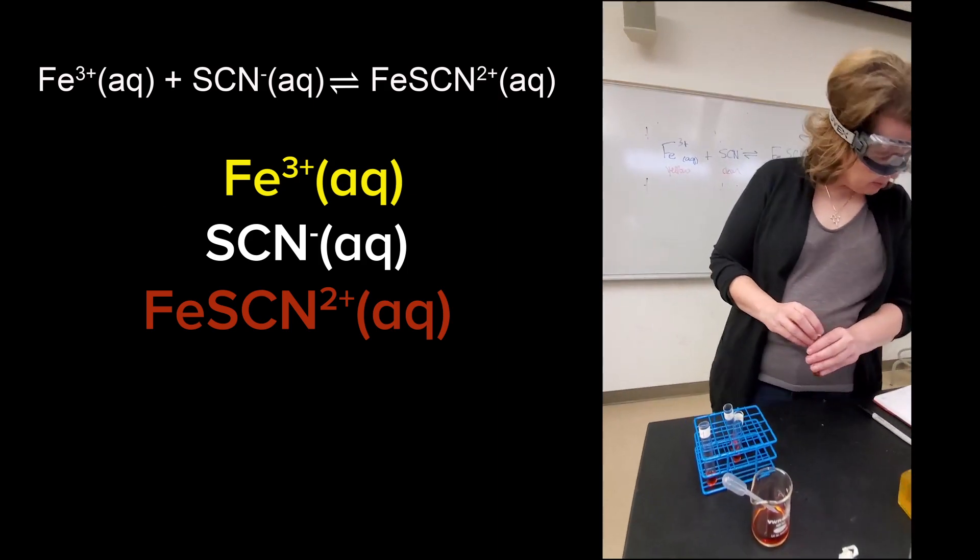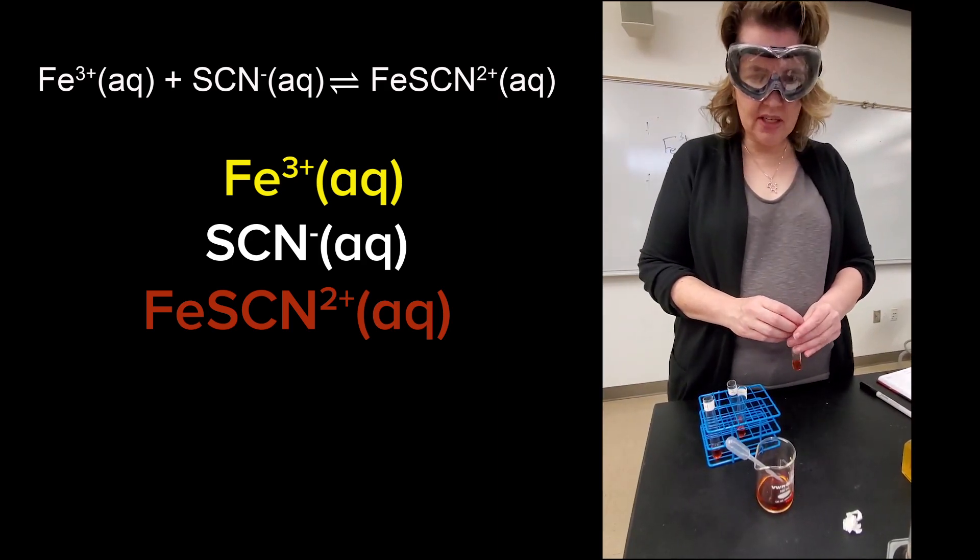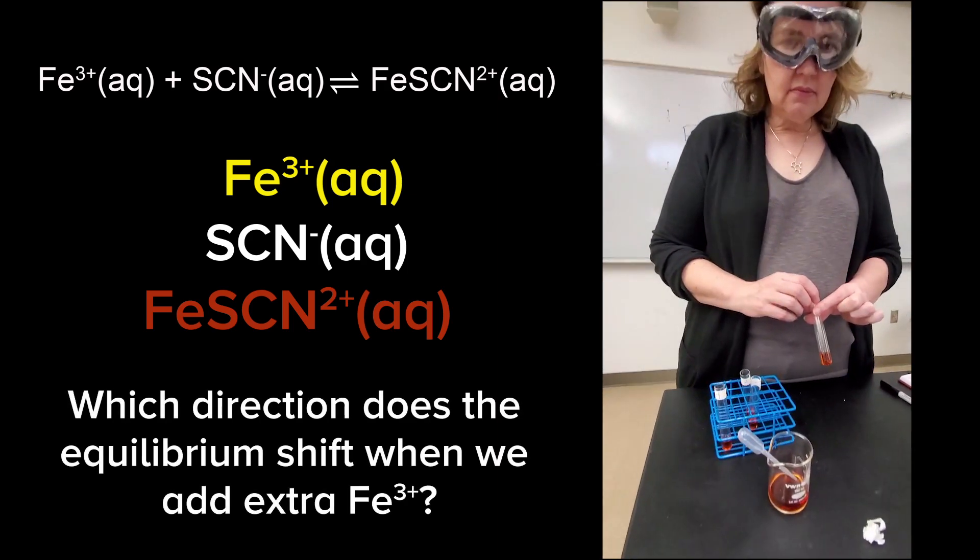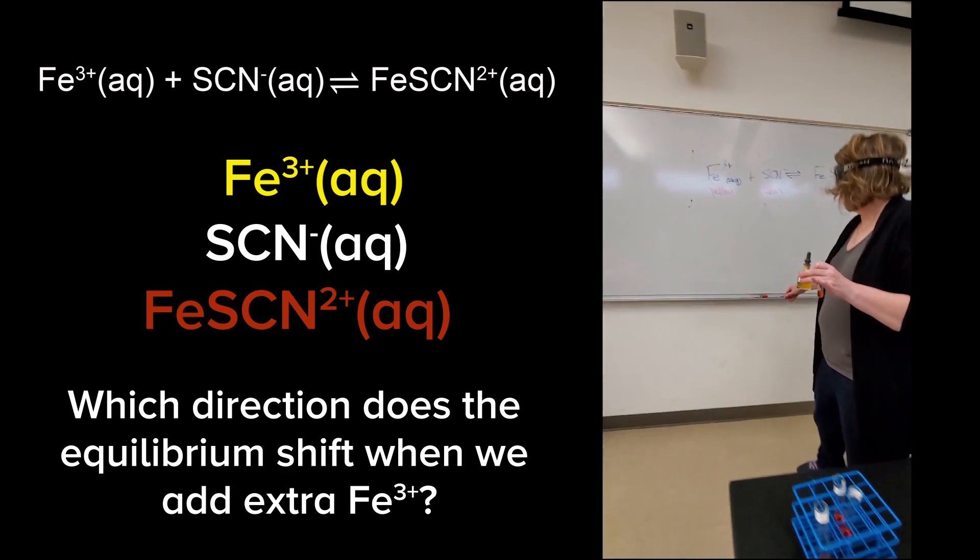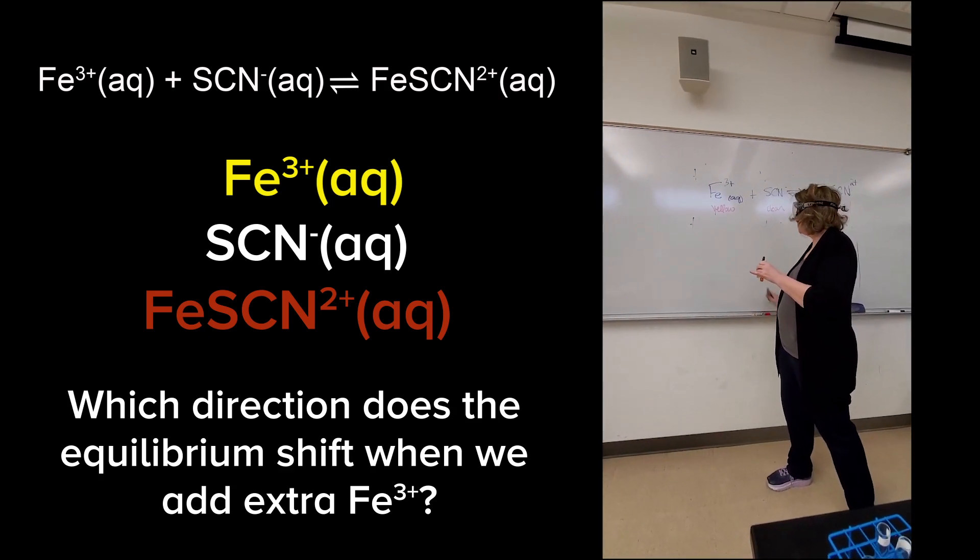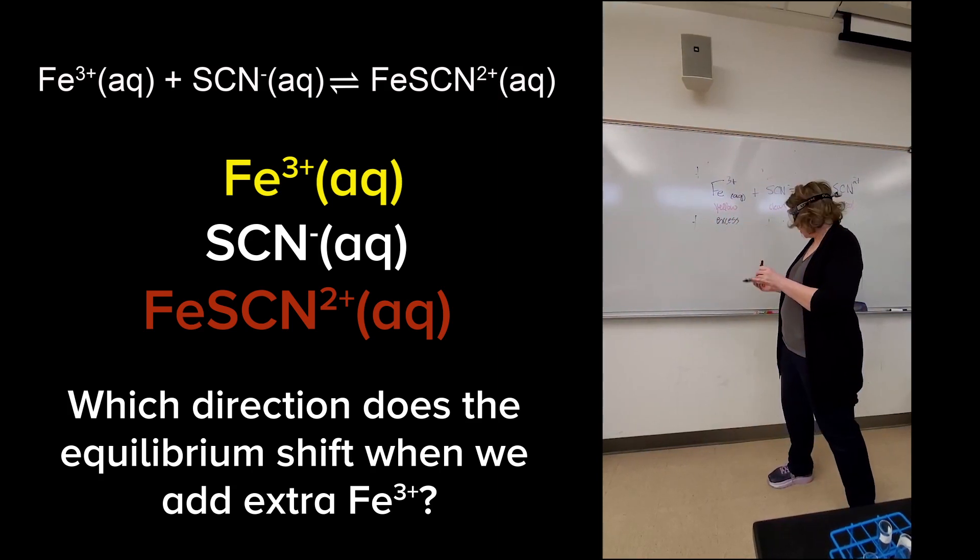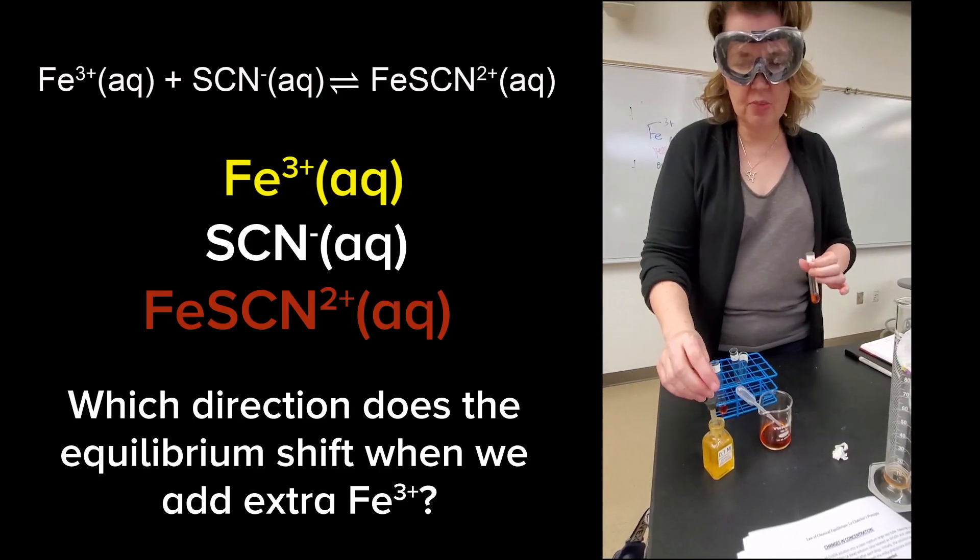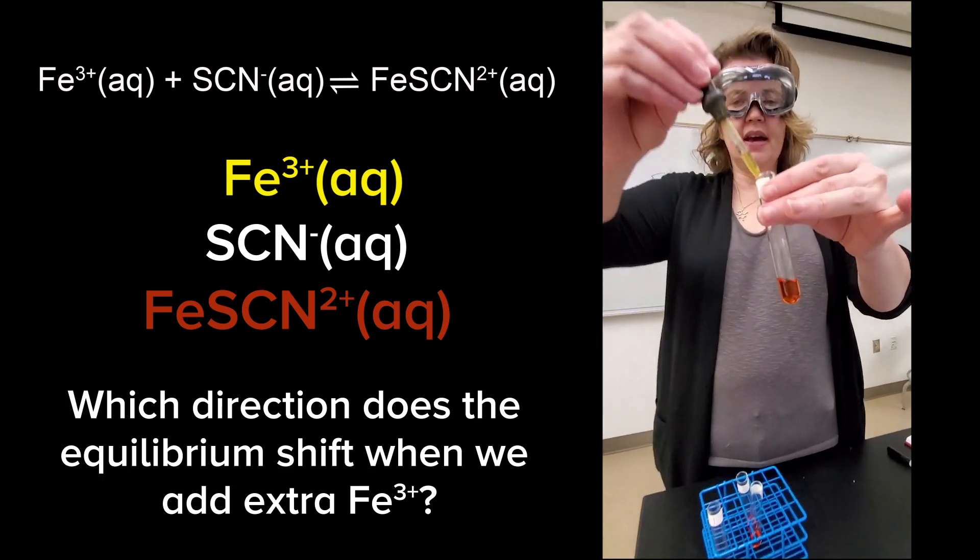Now I'm going to play with Le Chatelier's principle by adding excess of some reagent. So the first one I'm supposed to play with is which one? You want to add 10 drops of the 0.1 molar iron chloride. So that's this. So here on the board, I'm going to put an excess of this iron. So what's going to happen as I add excess? Le Chatelier's principle, take a minute and make your prediction.